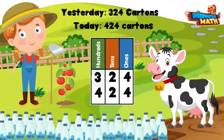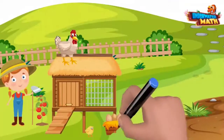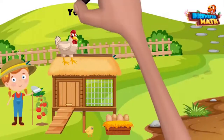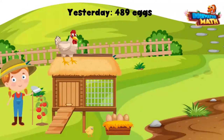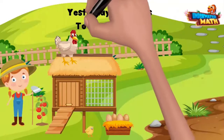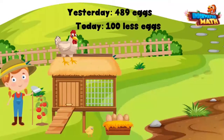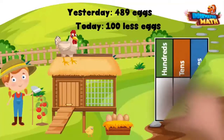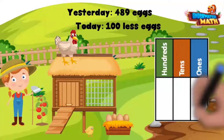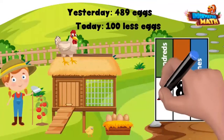Thanks for making all of that milk, Betsy! Let's walk over to our chicken coop. I collected 489 eggs yesterday, and today I collected 100 less eggs. Remember, when working with 100 more and 100 less, we need to look at the hundreds place.